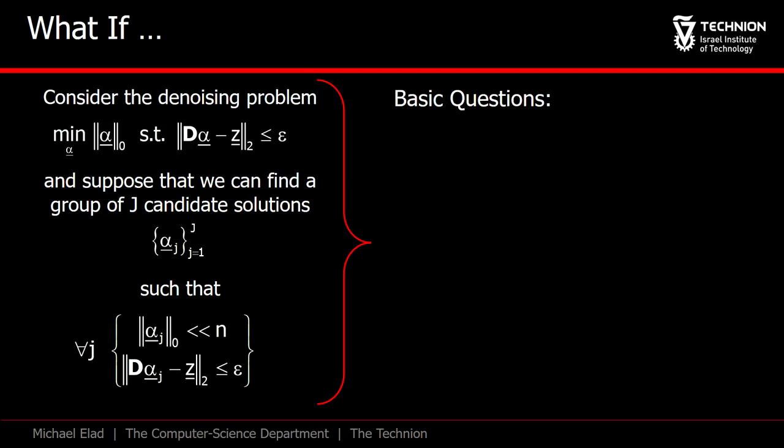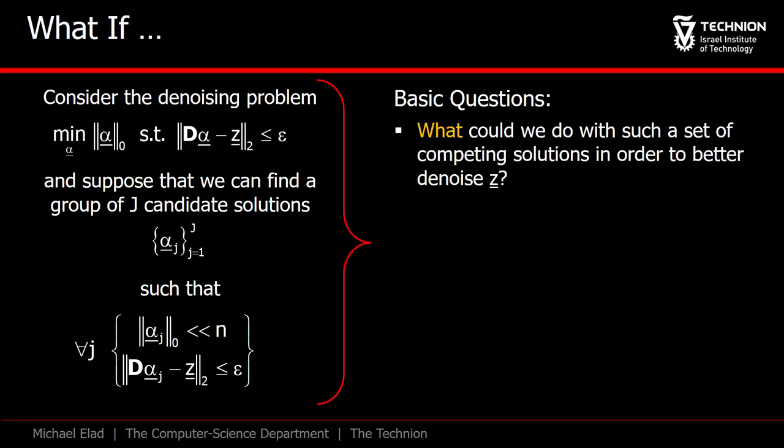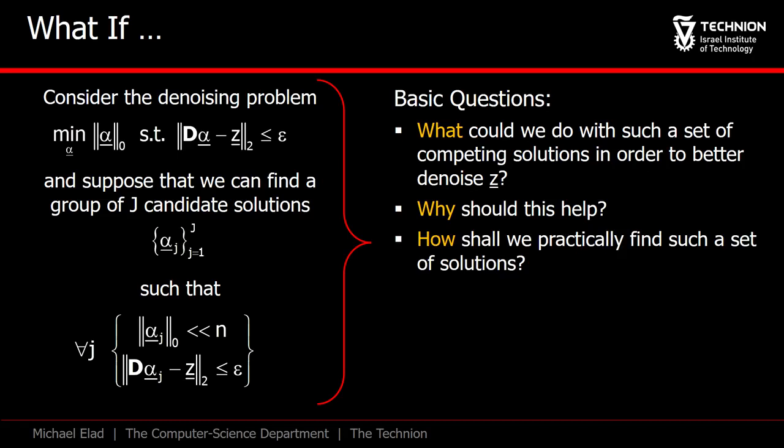Then here are a few intriguing questions. What could we do with such a set of solutions? If anything beneficial could be done with them, why would this be possible? And above all this, how could we get such a set of results?